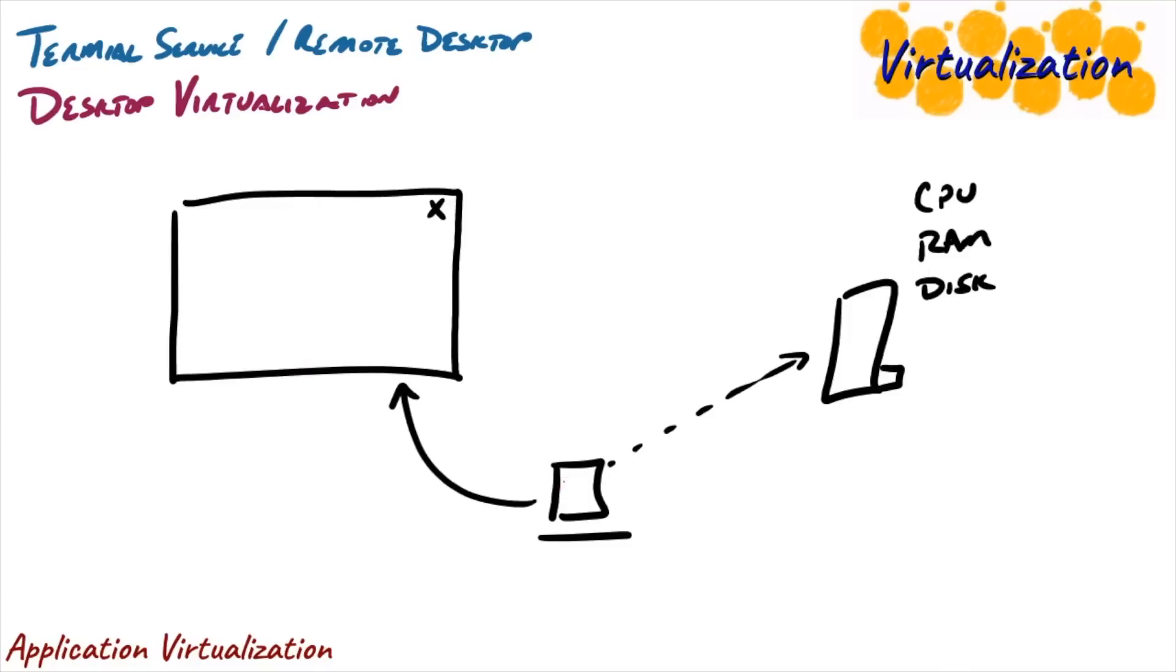And then there's a third main type of application virtualization. And that's called application streaming. I stream, you stream, we all stream for app stream. So with application streaming, we launch an application and then we're going to connect to an application hosting server which has that application available. It's on that server's disk. And then that application is delivered to the desktop where it can then execute and provide the user experience.